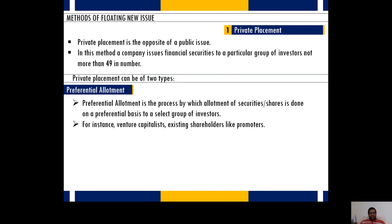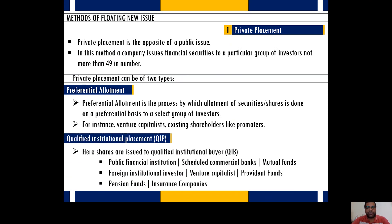In preferential allotment, some institutions that buy shares from the company include venture capitalists and shareholders like promoters. The other option of private placement is called qualified institutional placement. The key difference between the two is who the subscribers of securities are. In preferential allotment, shares are subscribed by individuals and venture capitalists.